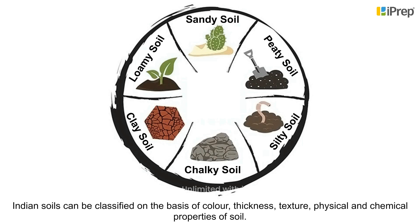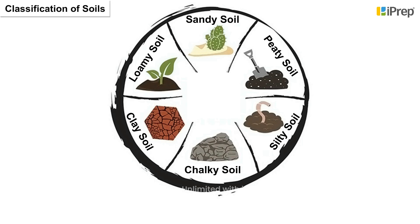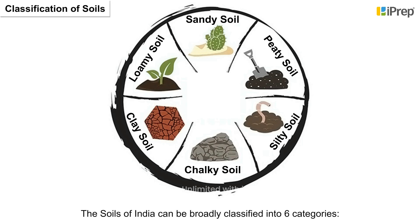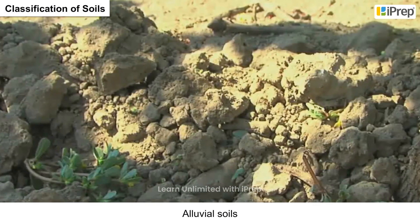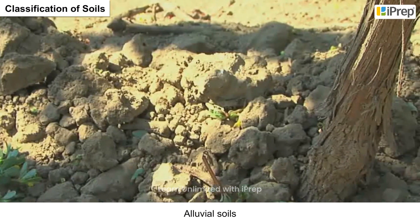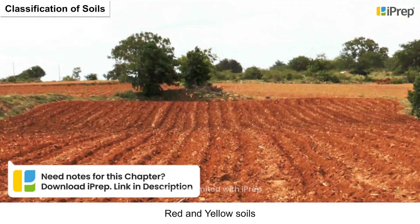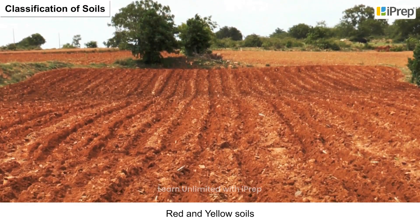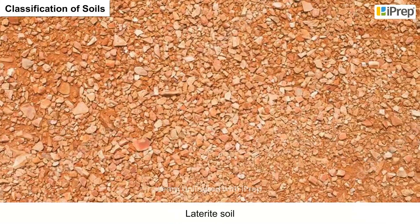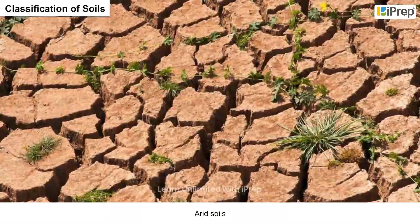Indian soils can be classified on the basis of color, thickness, texture, and physical and chemical properties of soil. The soils of India can be broadly classified into six categories.